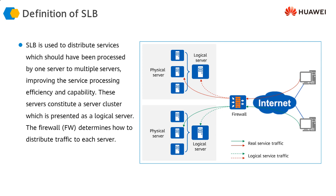In this scenario, the firewall load balances traffic across physical servers. These servers are called physical servers or real servers. They form a group or cluster called a real server group or real server cluster — the group across which we want to implement server load balancing.